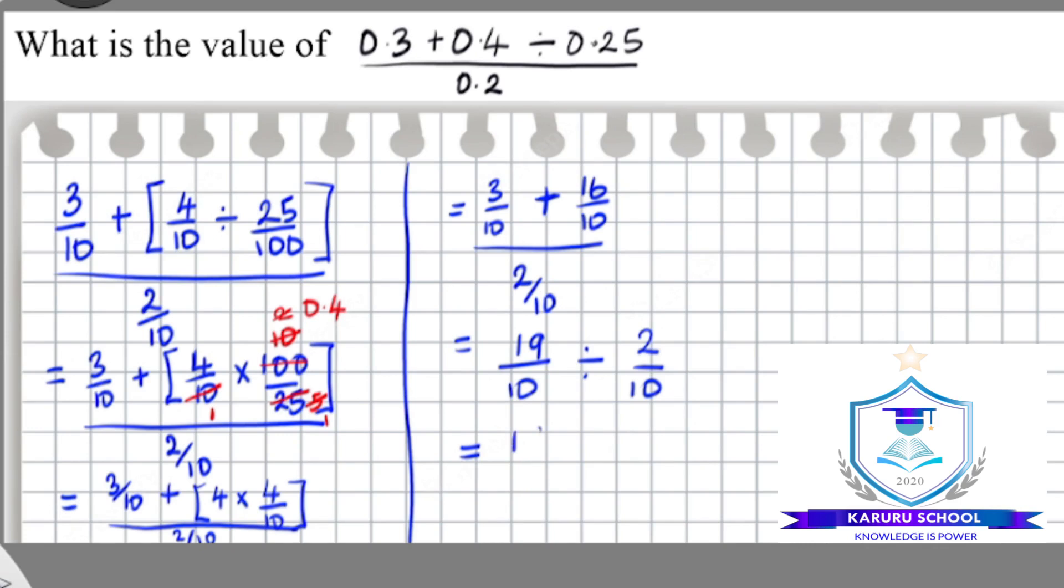The next step would be to simplify the new expression. So we have 19 over 10, we multiply this by the reciprocal of 2 over 10, which becomes 10 over 2. We can cancel out the common numbers. So divide here by 2, we get 1. Divide here by 2, we get 9. Then cancel by 10, we get 1. Cancel by 10, we get 1. So the answer to our expression becomes 9.5.